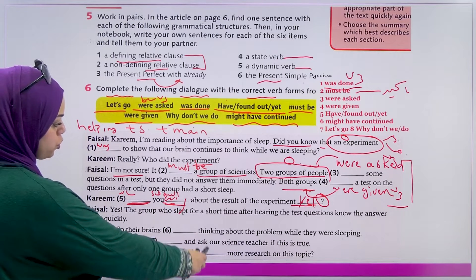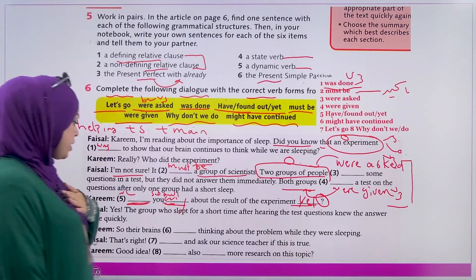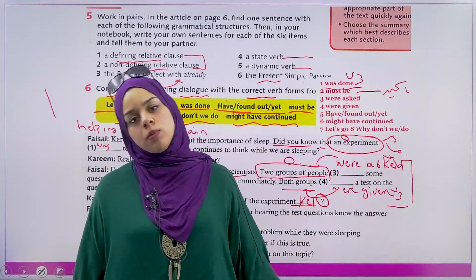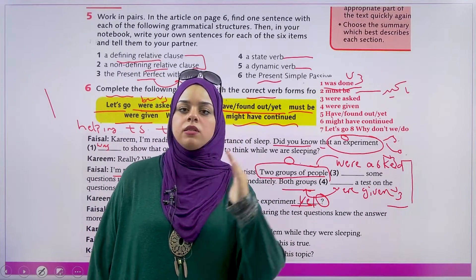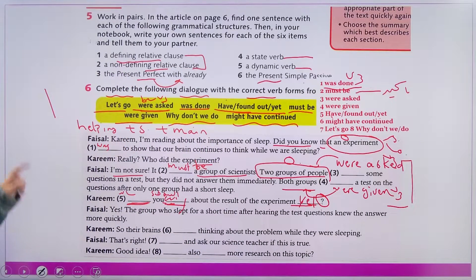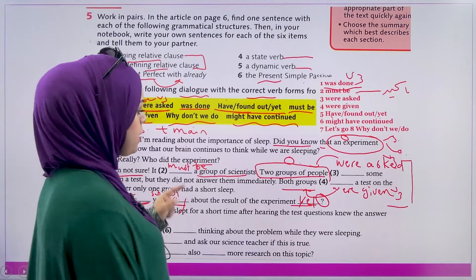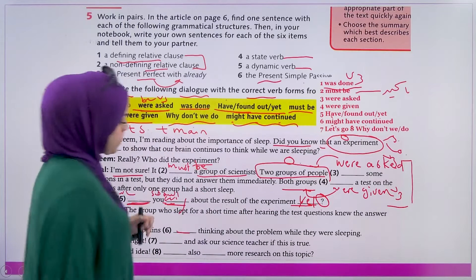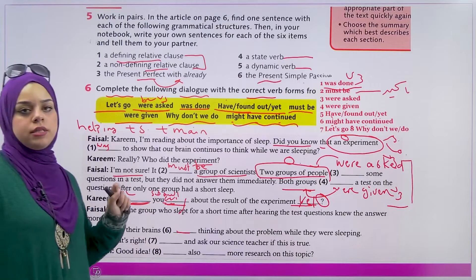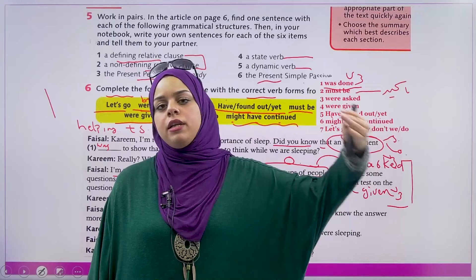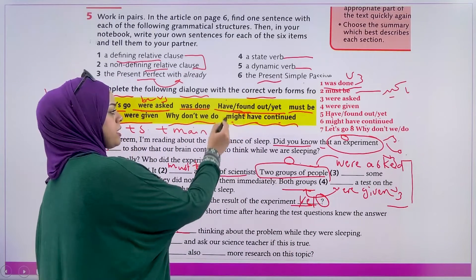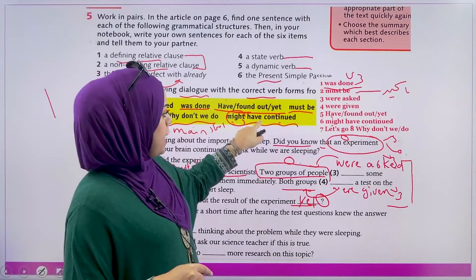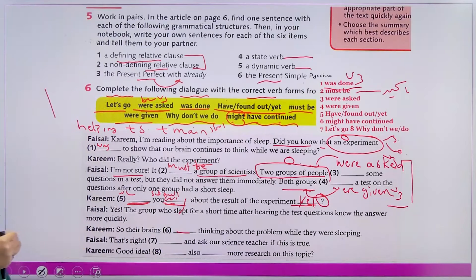'Not yet.' 'Yes, the group who slept for a short time after hearing the test questions knew the answers more quickly.' Those who received the questions and slept, then woke up, knew the answers faster than those who stayed awake — because sleep, as we learned, organizes information. 'So their brains might have continued thinking about the problem while they were sleeping.' We chose 'might' because it's a possibility — we're not certain what happened while they slept, but their brains possibly continued thinking.